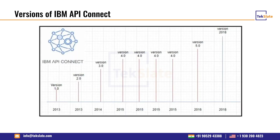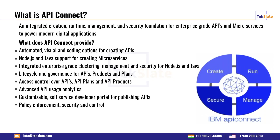Starting from version 1.0 in 2013, versions 2.0 and 3.0 followed, then version 4.0 in 2015, with new features released quarterly. Version 5.0 was released in 2016, and in 2018 IBM jumped to version 2018. The current version of IBM API Connect is 2018.